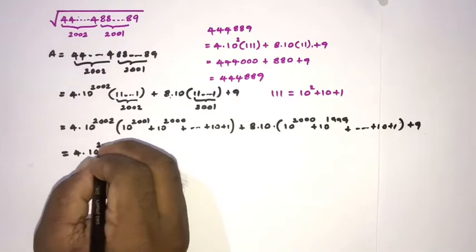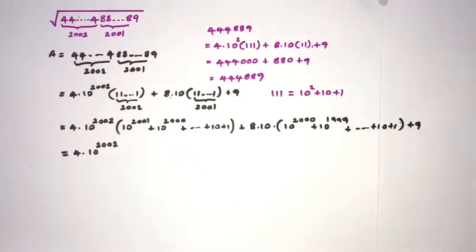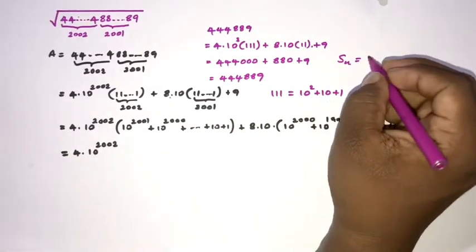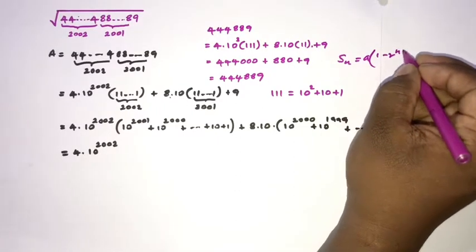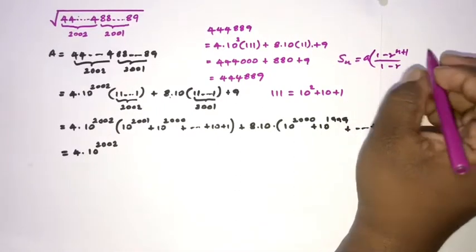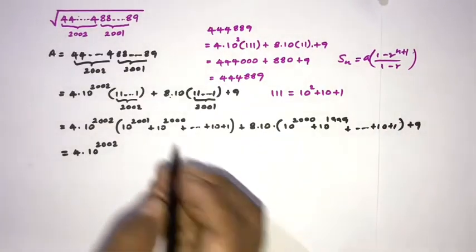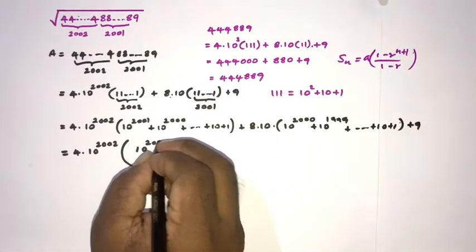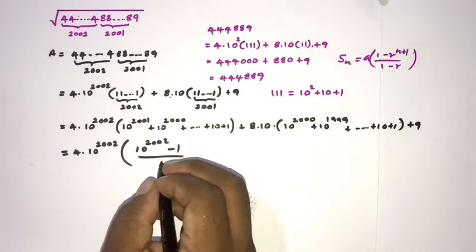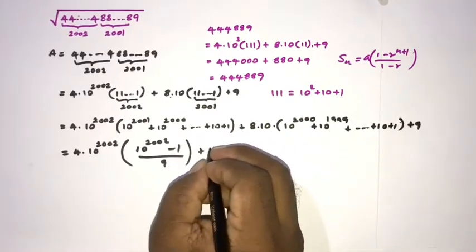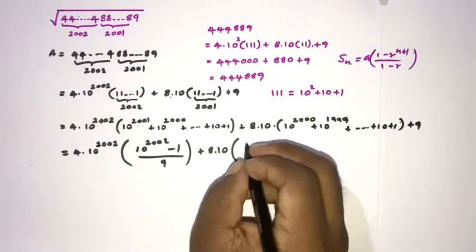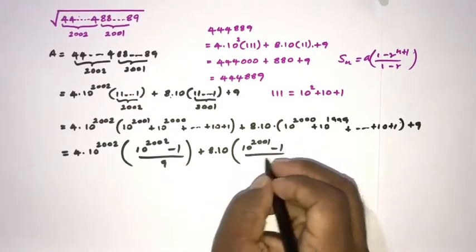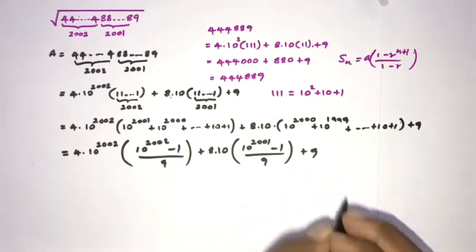We can now apply the geometric series formula. The sum of a geometric series equals a times (1 - r^(n+1)) / (1 - r). So we write: 4 times (10^2002 - 1) / (10 - 1), which is divided by 9; then plus 8 times 10 times (10^2001 - 1) / 9; plus 9.